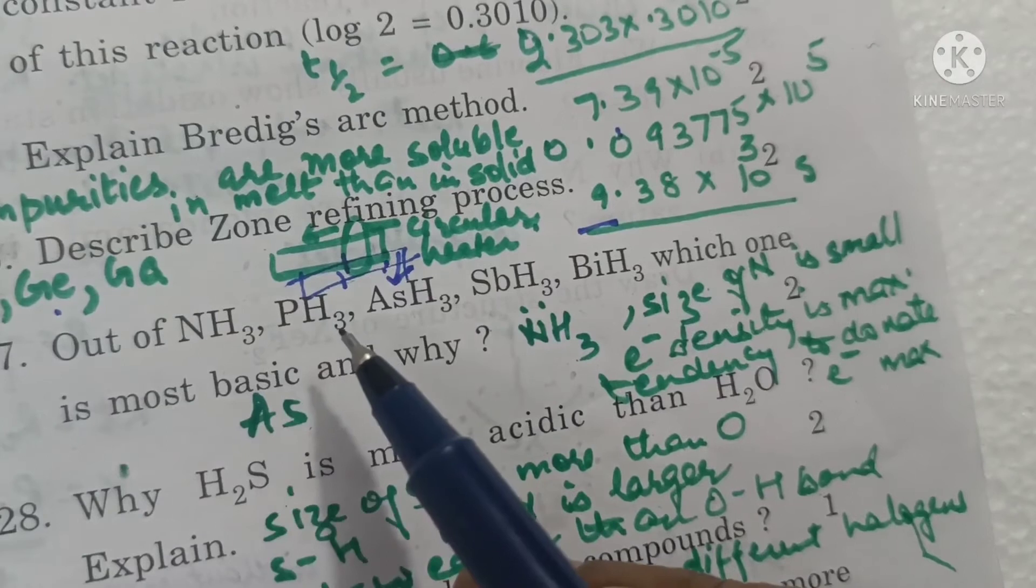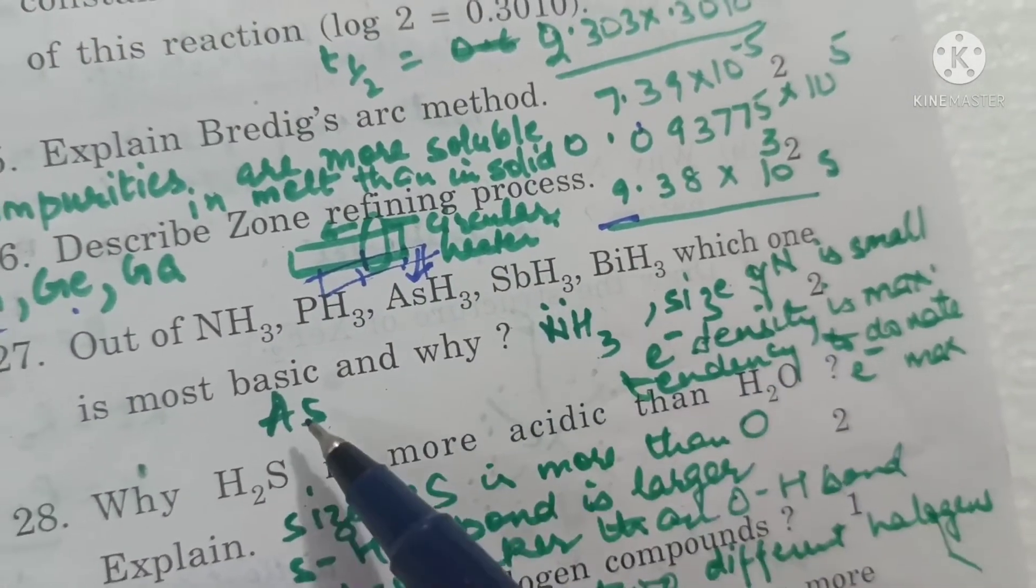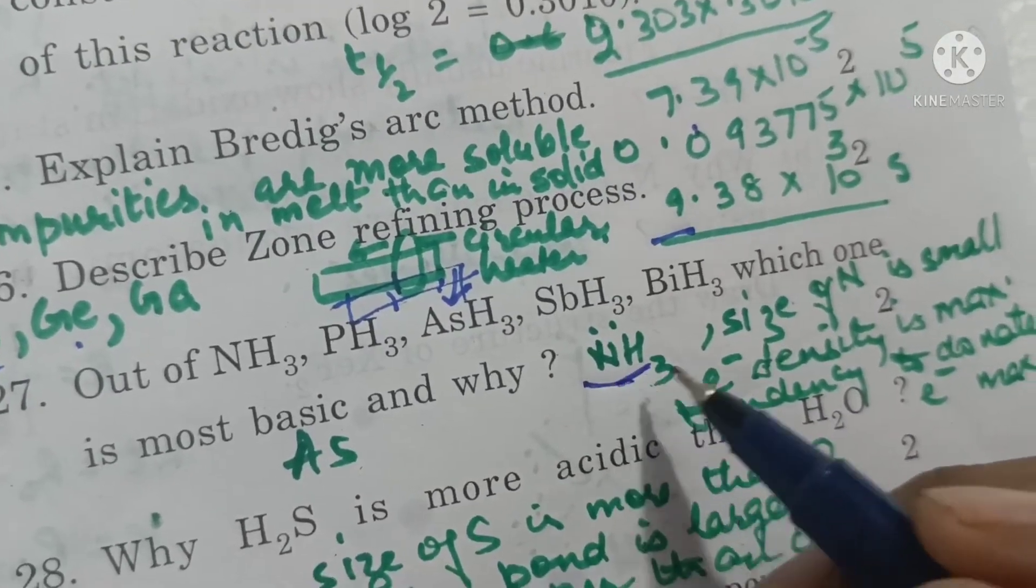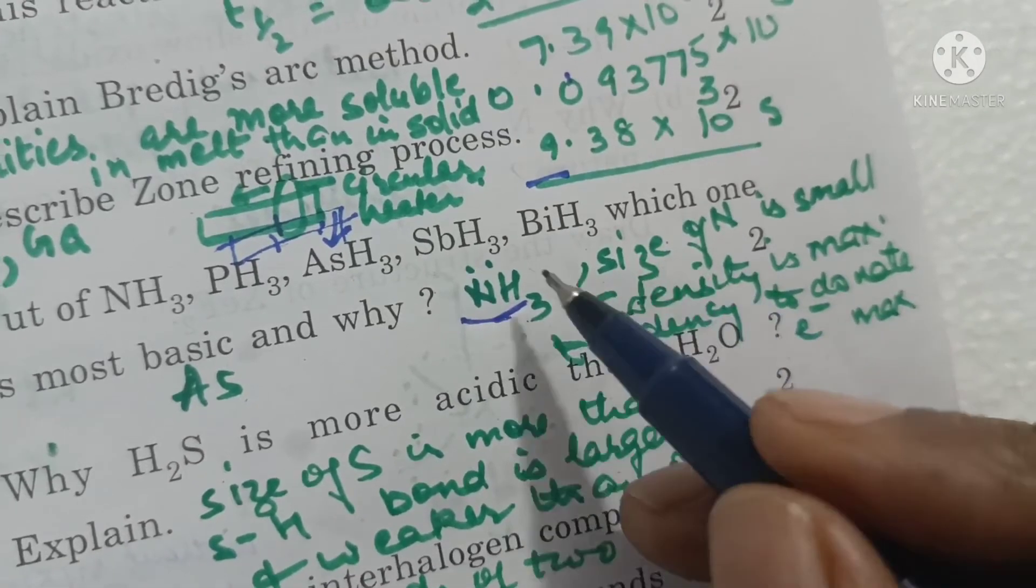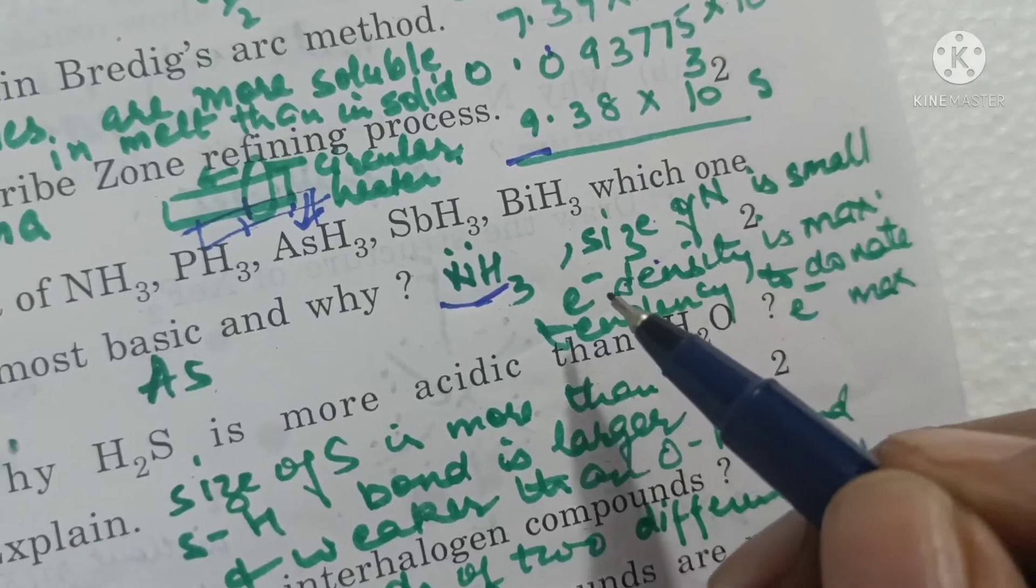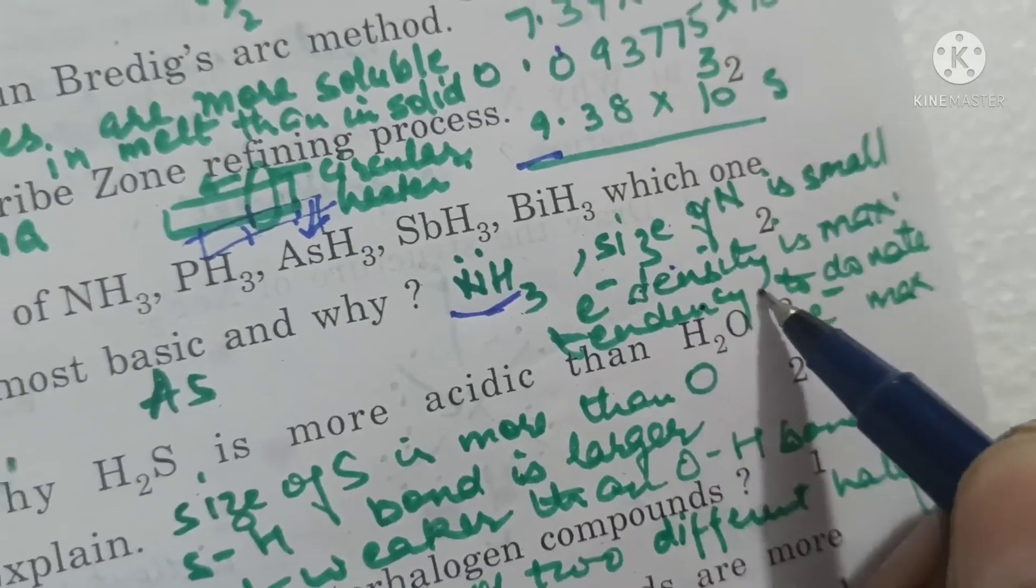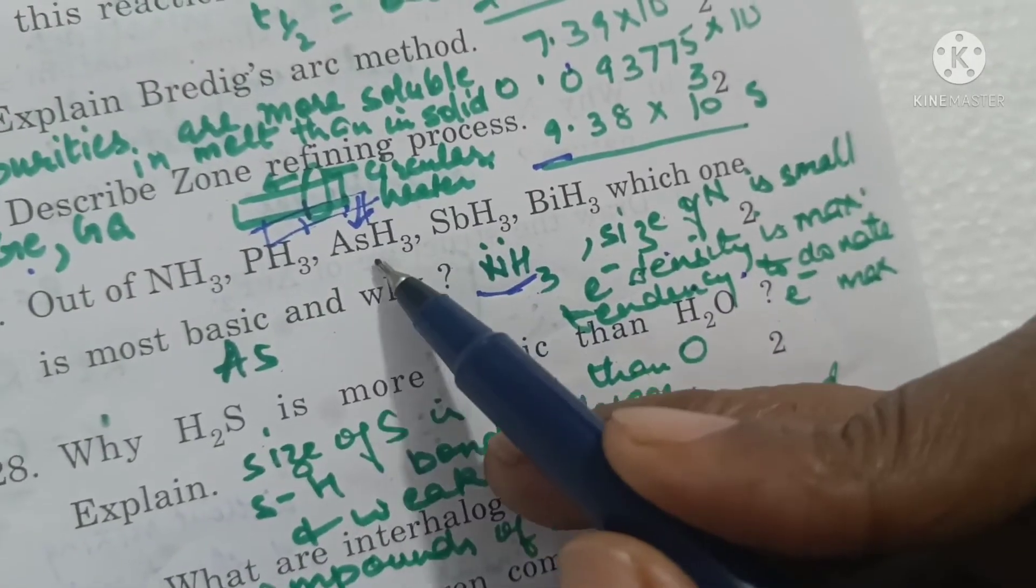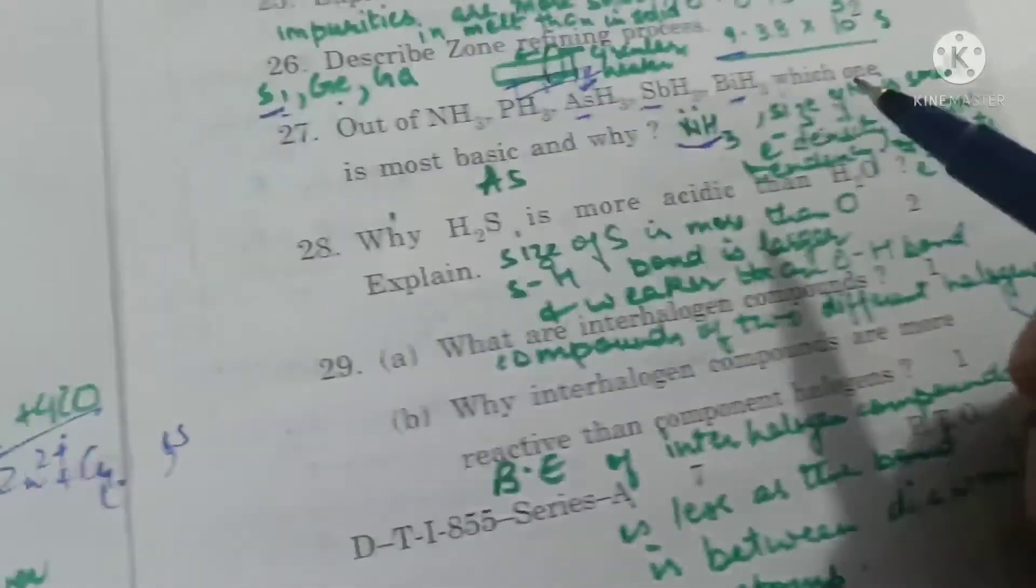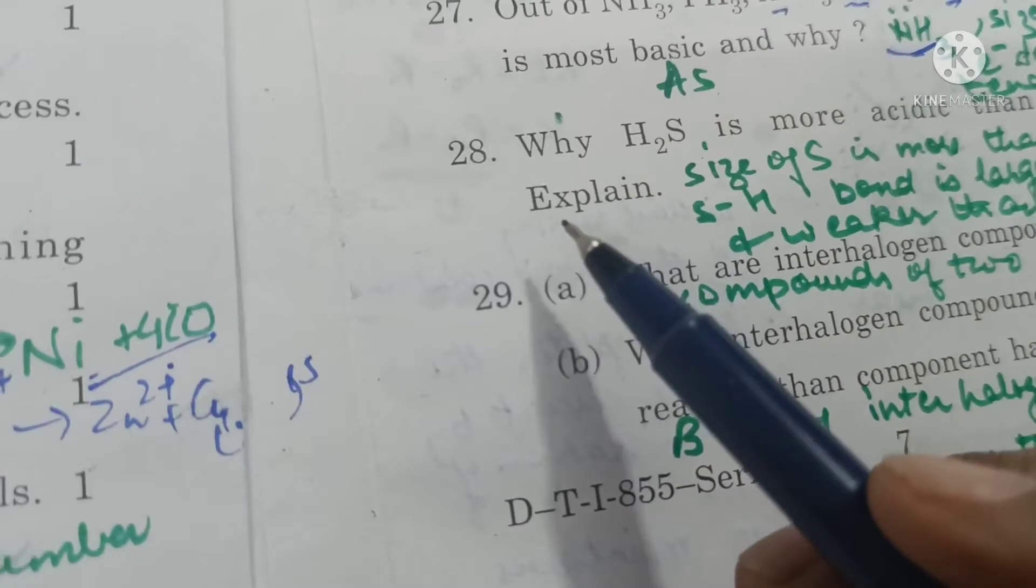Out of ammonia, PH3, AsH3, SbH3, BiH3, which one is most basic and why? Ammonia is the most basic because the nitrogen atom is the smallest. The lone pair of electrons on a small atom will show greater electron density and the tendency to donate electron will be maximum. As we go down the group, the size of atom increases, electron density decreases, and basic character also decreases.